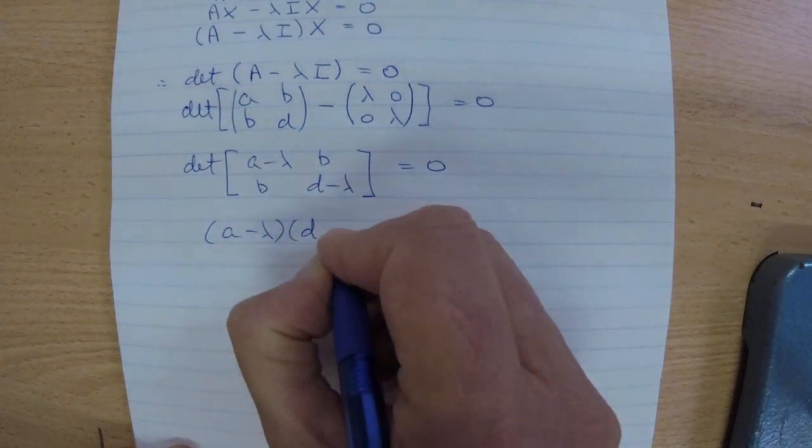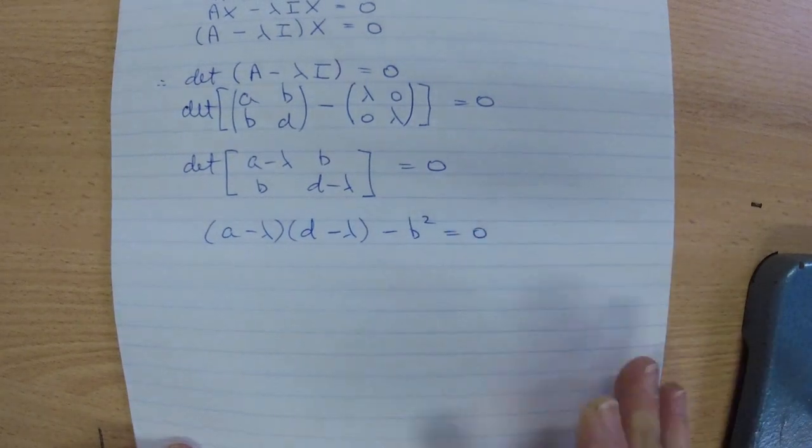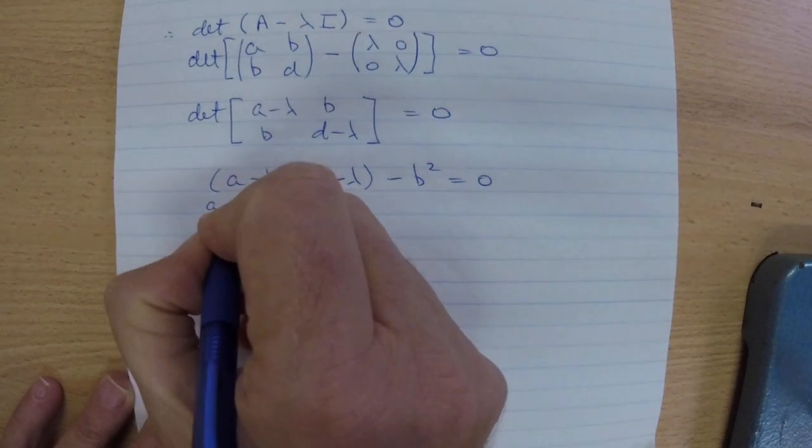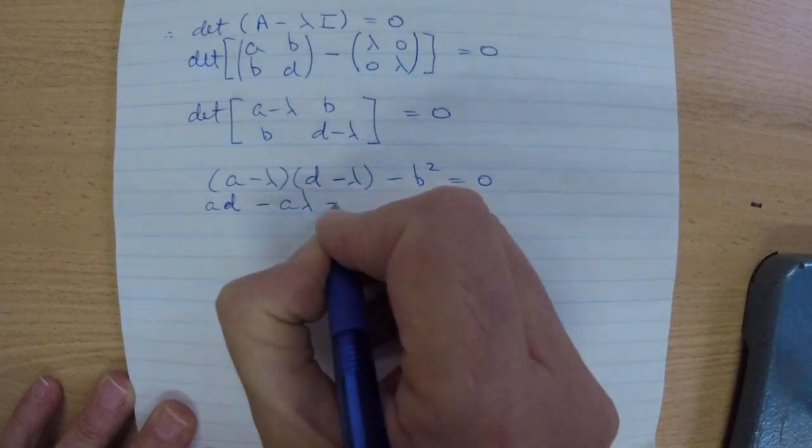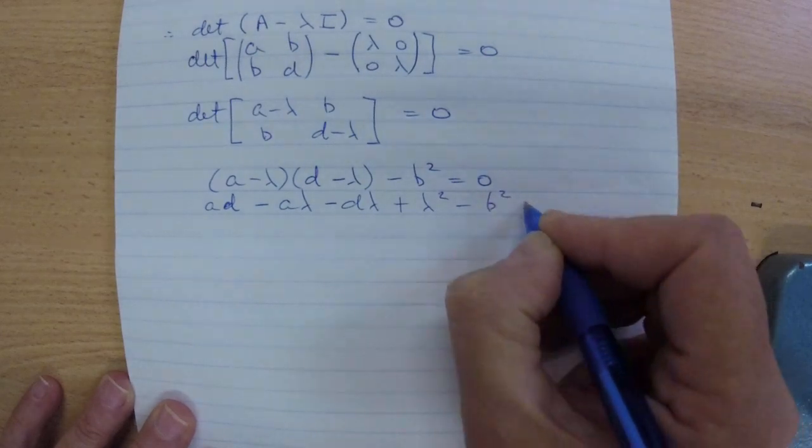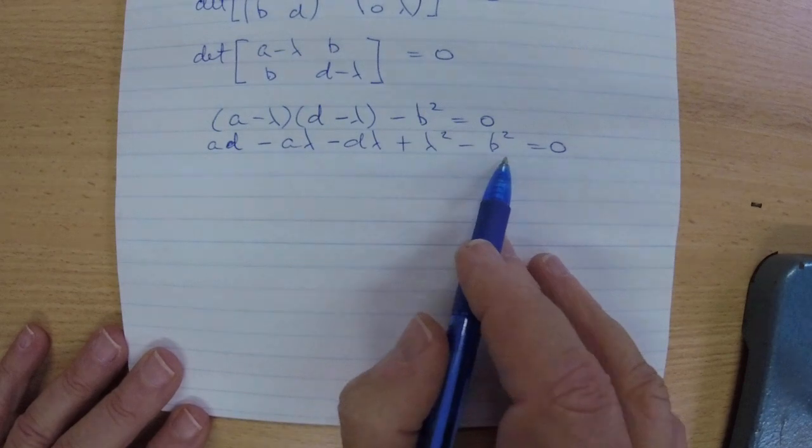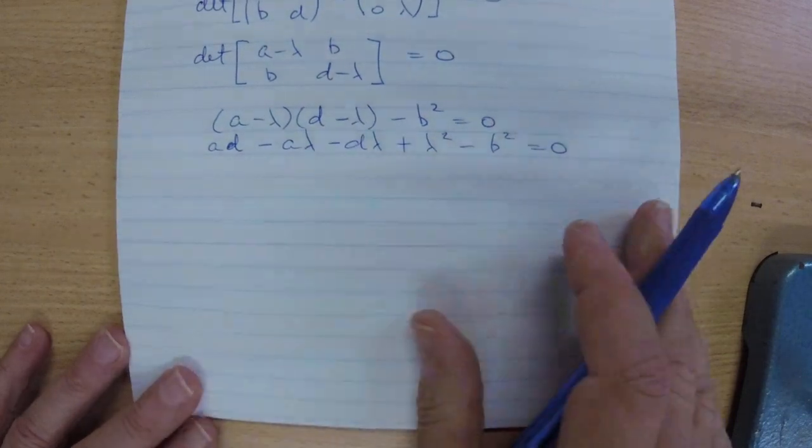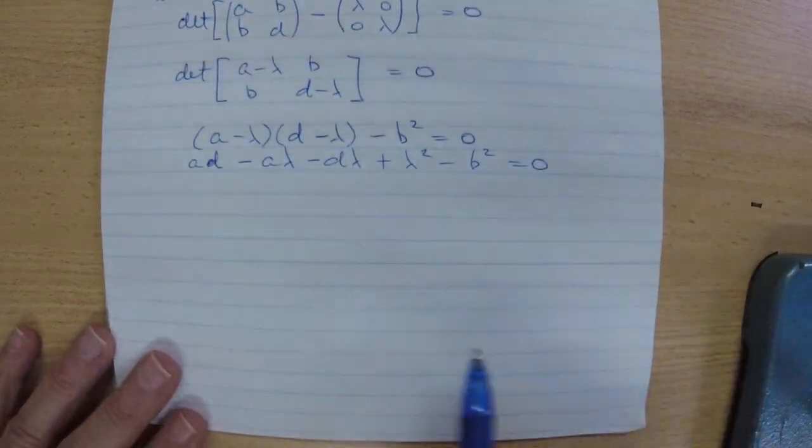And how do we find a determinant of a 2x2 matrix? It's the product of the leading diagonal, subtract the product of the opposite diagonal. So (A minus lambda)(D minus lambda) minus B squared equals 0. I think we should expand and collect like terms. A times D is AD minus A lambda minus D lambda plus lambda squared minus B squared equals 0. So it doesn't look quite like a quadratic yet, but we can do so. Remember, lambda is what we're solving for. A, D, and B are constants.